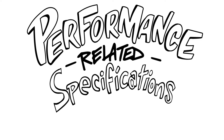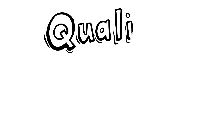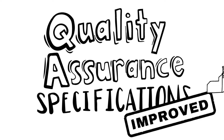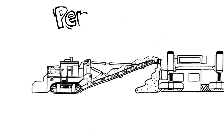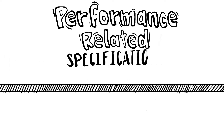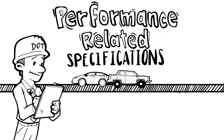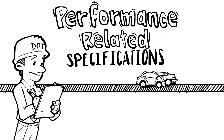Performance-related specifications provide a bridge between construction quality and long-term performance as assessed during and immediately following construction. They are improved quality assurance specifications wherein the quality characteristics used for acceptance are related to the performance of the in-place product through mathematical modeling. They represent a progression toward increased use of properties that are more indicative of how the finished product will perform over time.